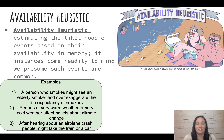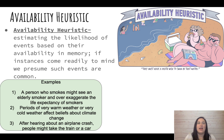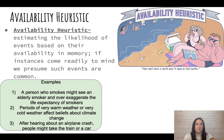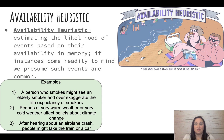The availability heuristic is estimating the likelihood that an event will happen based on what's available in your recent memory - what have you been made aware of recently. For example, people sitting on the beach say they would not go in the water because of shark attacks. Shark attacks make headlines, so it's an available thing that pops into their head.